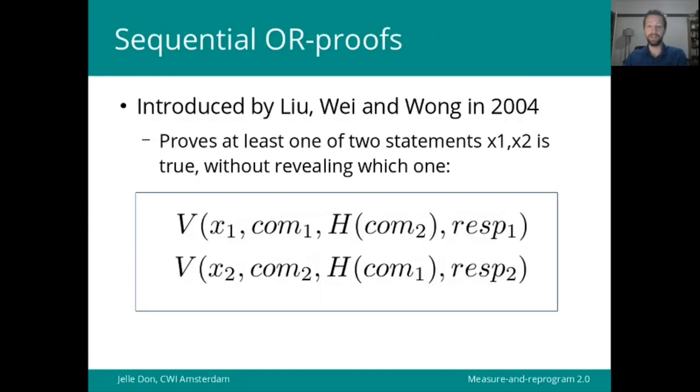So finally, a few words about another application of our new technique, namely sequential OR proofs. This is something introduced by Liu, Wei and Wong in 2004. It's Fiat-Shamir with a twist, which allows a prover to prove the truth of at least one of two statements, x1, x2, without revealing which one. So it's a proof of disjunction, really.